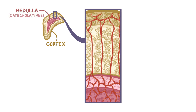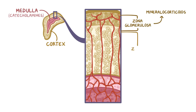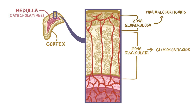The outermost zone is the zona glomerulosa, which secretes mineralocorticoids. Next, there's the zona fasciculata, which secretes glucocorticoids, of which cortisol is the most important one. And finally, there's the zona reticularis, which secretes androgens.